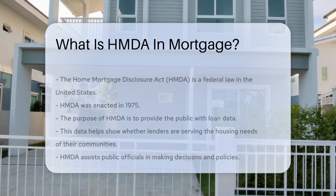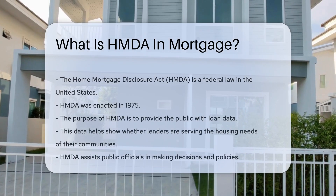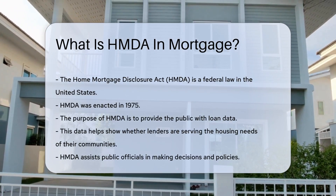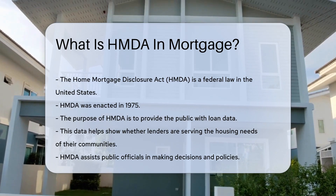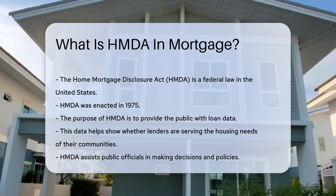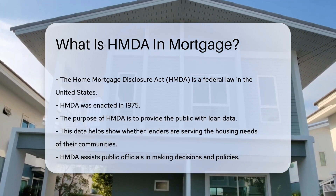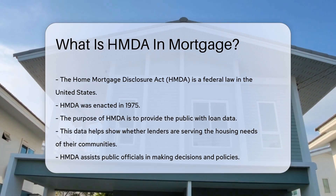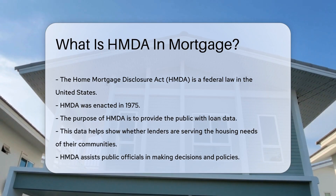The Home Mortgage Disclosure Act is a federal law in the United States. It was enacted in 1975. The purpose of HMDA is to provide the public with loan data.